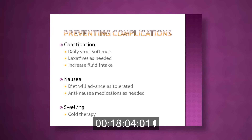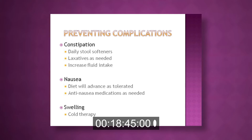To prevent complications, constipation is a real concern: surgery slows your bowel, you eat less, are less active, and most pain medicines cause constipation. We give stool softeners twice a day and recommend taking laxatives as needed and increasing your fluid intake. For nausea, start with a soft diet and advance as tolerated; we have IV medications to help. For swelling, we use ice packs continuously while you are in the hospital.